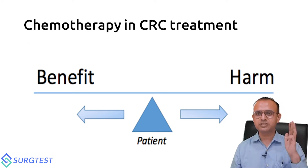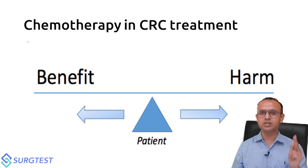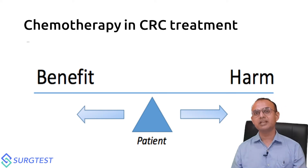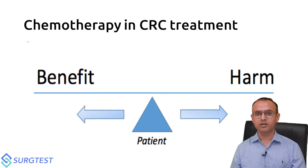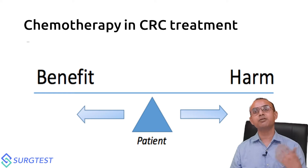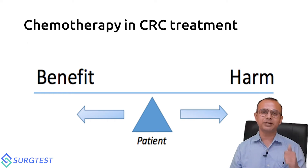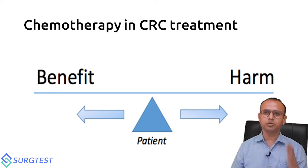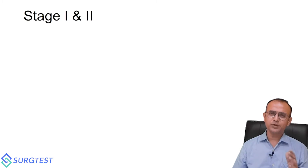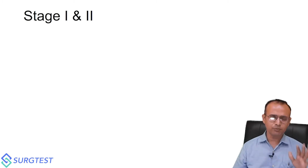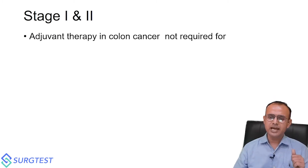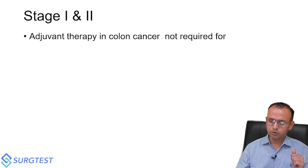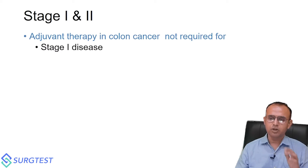For each stage, we have to decide: in stage one, is chemotherapy needed? In stage two, is it needed? In stage three, if needed, what kind — oxaliplatin, irinotecan, capecitabine? If it is stage four metastatic, what kind of chemotherapy? Those are the questions we will see here. Roughly, adjuvant chemotherapy is not required for stage one disease.